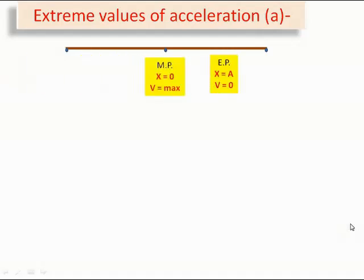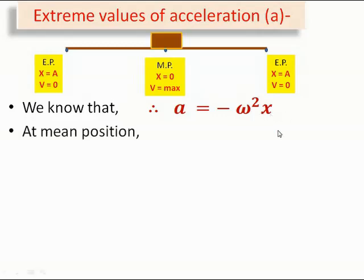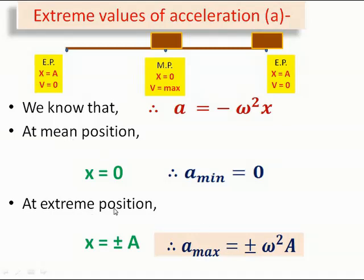Finally, we find the extreme values of acceleration using a = −ω²x. At the mean position, x = 0, so acceleration = 0 — this is the minimum. At the extreme position, x = ±a, so acceleration = ∓ω²a — this is the maximum. In summary: acceleration is minimum (zero) at the mean position, and maximum (ω²a) at the extreme position for a particle performing simple harmonic motion.